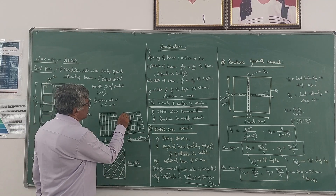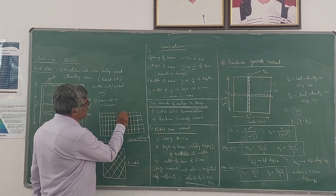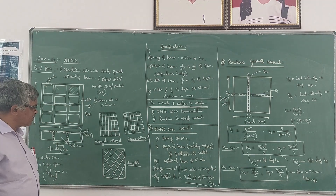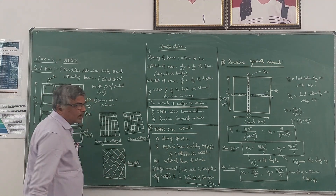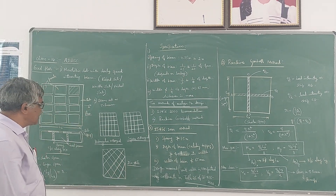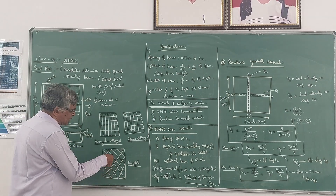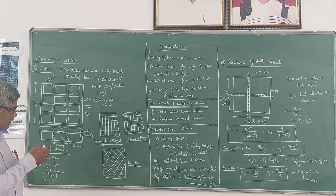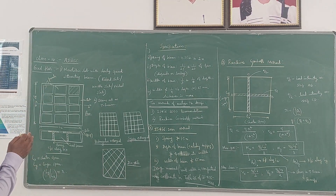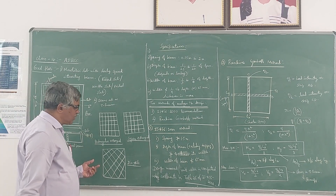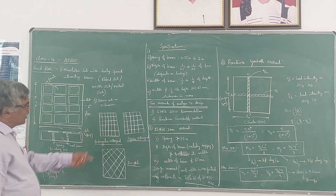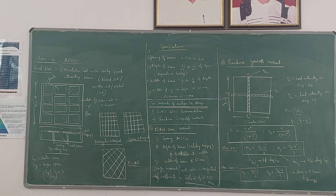If the dimensions are equal, they are called a square or co-grid. Sometimes, due to architectural purposes, they may also provide diagonal ribs. This is an example of a triangular matrix. In the case of a triangular matrix, you can have rectangular, triangular, or any other shape. So these are the different types of grid floors you can see.